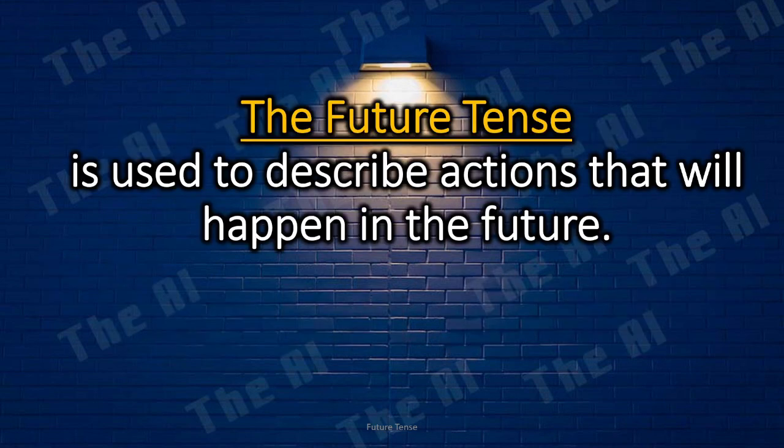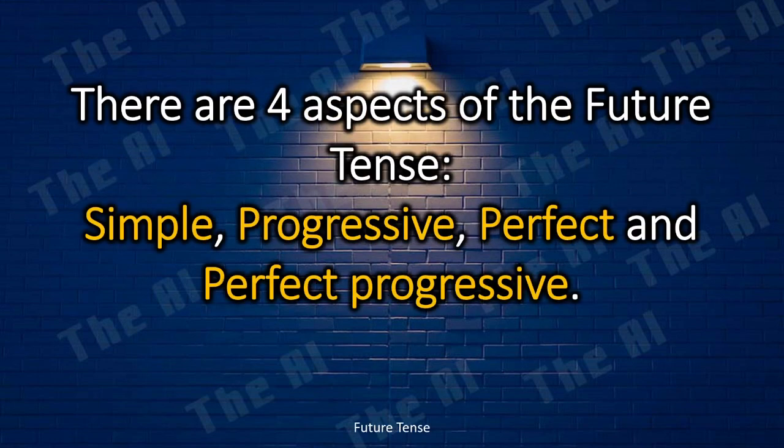The future tense is used to describe actions that will happen in the future. There are four aspects of the future tense: simple, progressive, perfect, and perfect progressive.